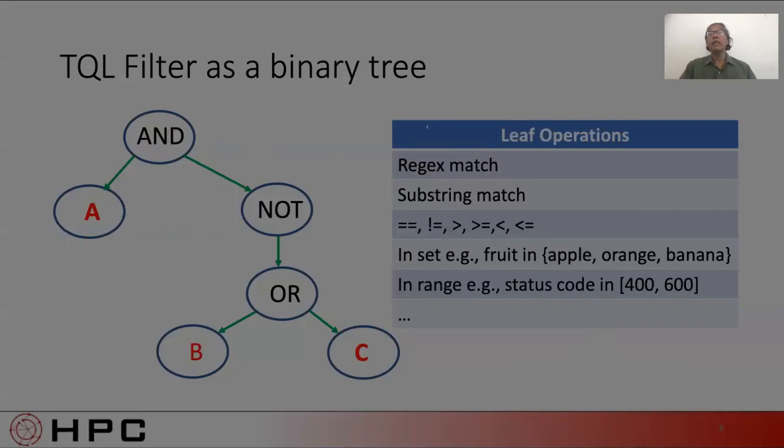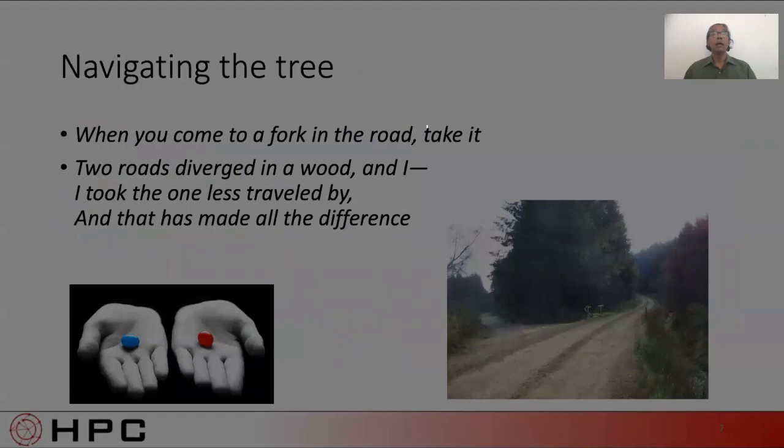The key decision at runtime is do we start down the left branch of the root or the right branch? When it comes to making decisions like this, we can look for inspirations from a variety of sources, ranging from Yogi Berra to The Matrix. And for the artists among us, we could take the lead from Robert Frost. But seriously, we need a disciplined decision-making process.